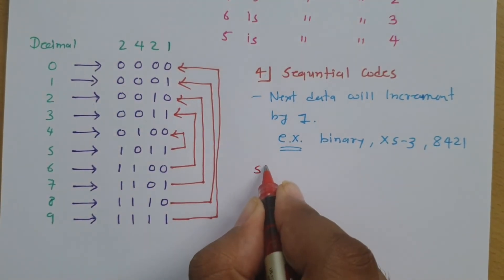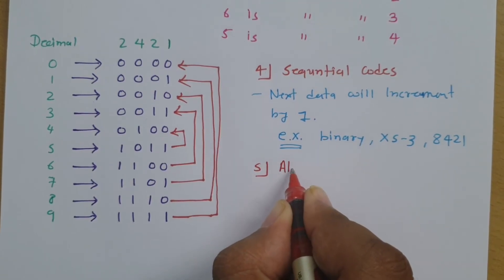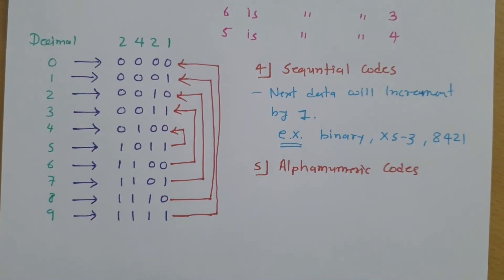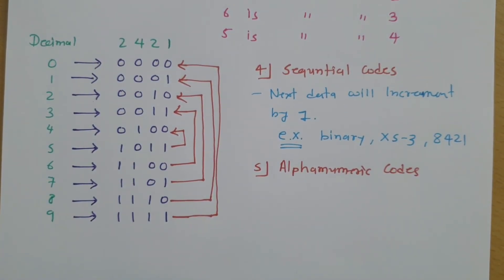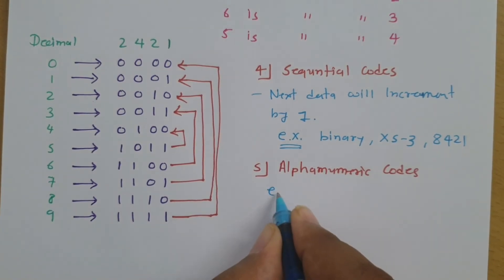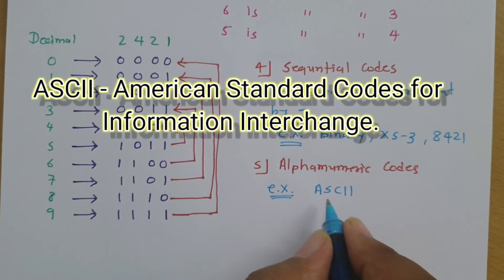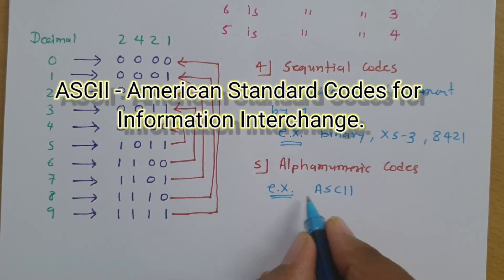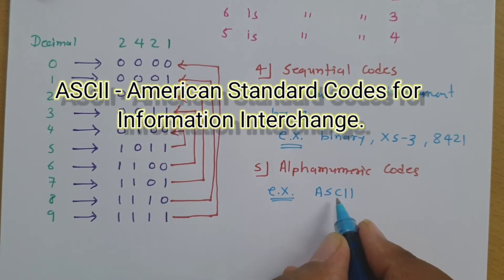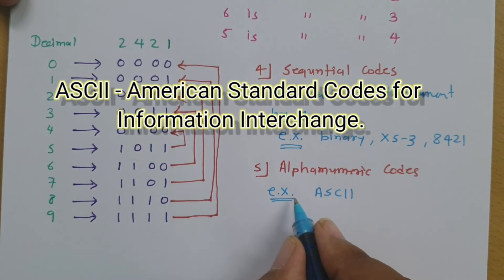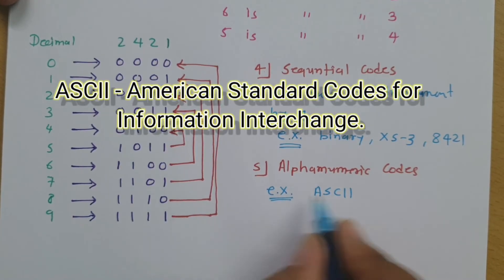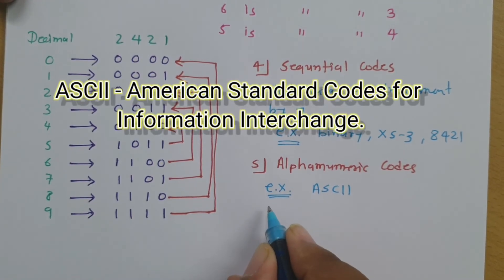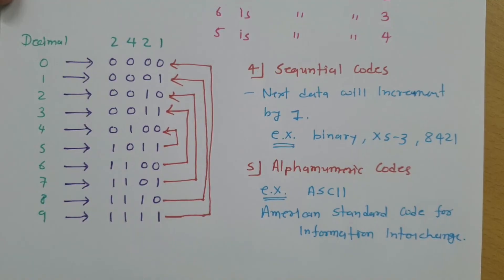The fifth category is alphanumeric code. An example is ASCII, which stands for American Standard Codes for Information Interchange. I will be explaining this in detail in a separate session.